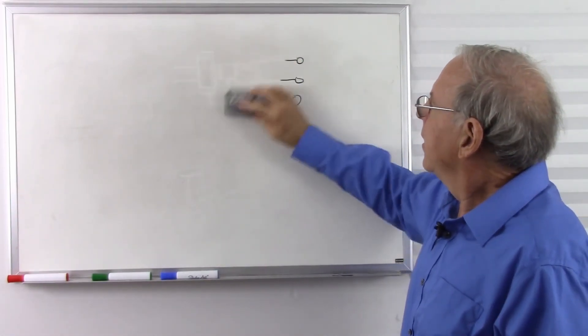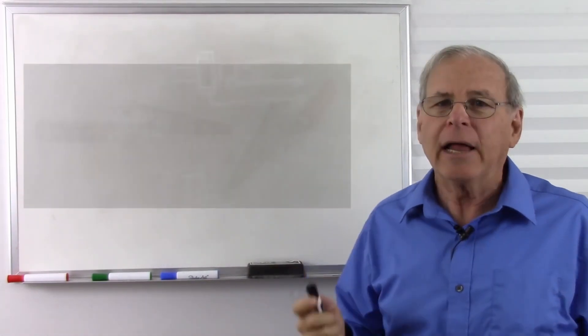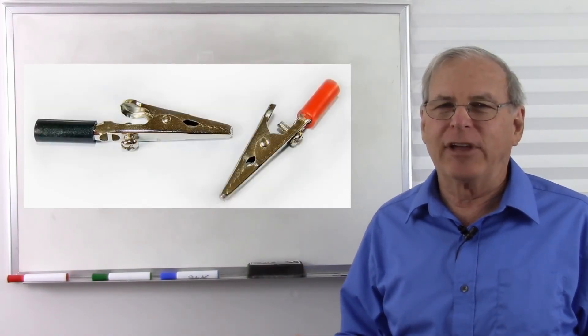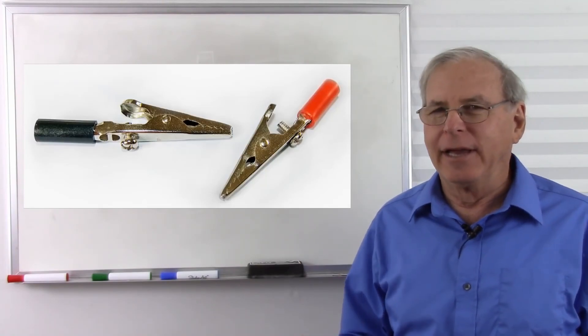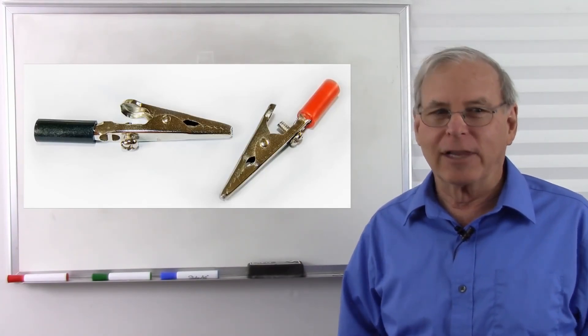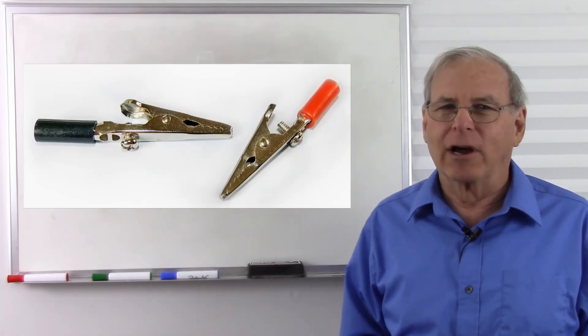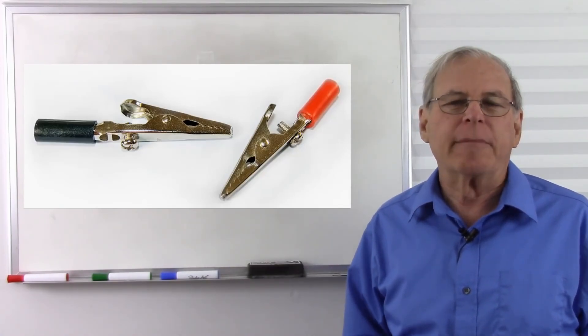The next connector we have is the alligator clip, or sometimes called a crocodile clip. We have alligators in the States, so we call it an alligator clip. In other parts of the world they have crocodiles, so they call them crocodile clips. And I don't think I need to explain why they are called alligator or crocodile clips. No particular schematic symbol for these.